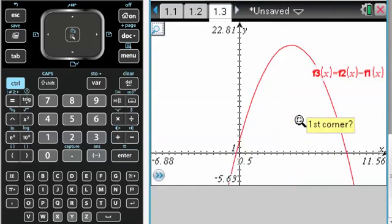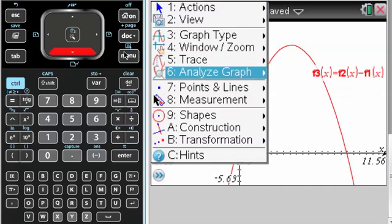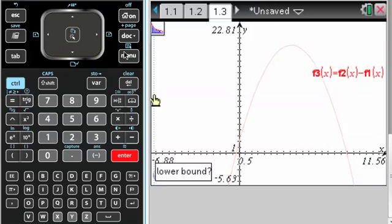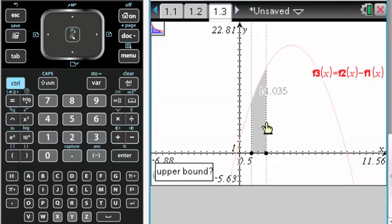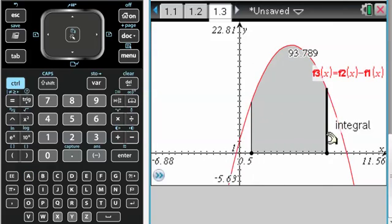go to menu, box, there to there. And then if I go to menu, analyze graph, integral, lower bound is, well, I'll put there, and then there, and then it would be really nice if I could drag it.